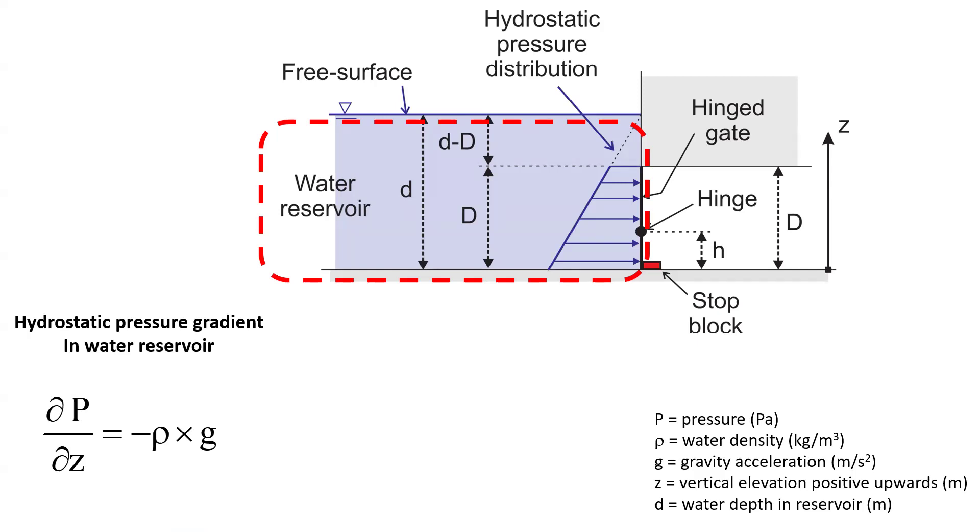Hence, at the bottom of the reservoir, the pressure equals rho g d. And in the entire reservoir, from the bottom to the water surface, we would have a triangular pressure distribution.